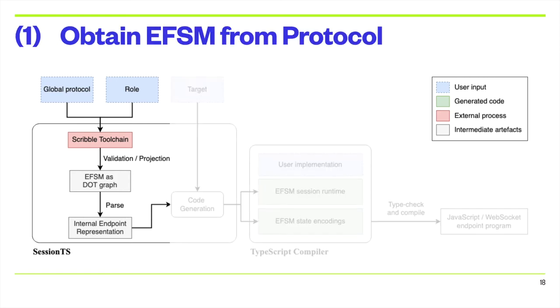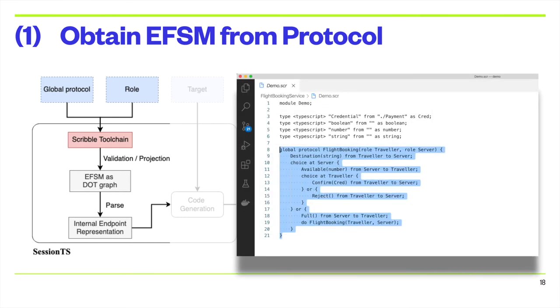First, the developer provides the flight booking service global protocol and specifies which endpoint to generate code for, for example, the server. The Scribble toolchain projects the global protocol onto the server endpoint to obtain the EFSM. SessionTS parses the state machine into an internal representation.